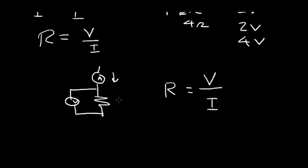An infinite resistor would be zero current. So if I equals zero in this case, V divided by zero equals an infinite resistance or an open circuit.